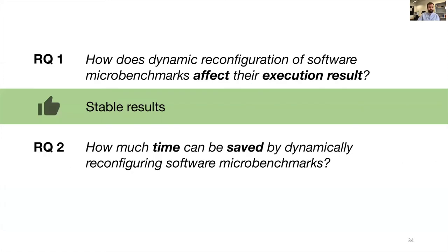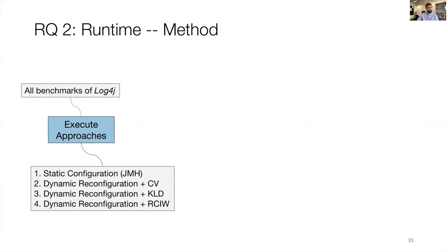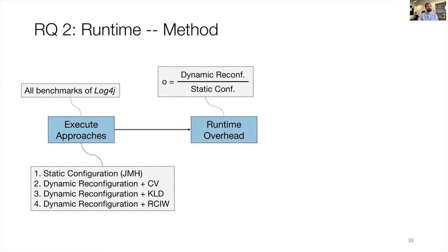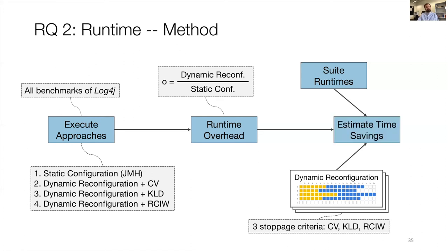For research question two, we execute all four approaches — static configuration and three dynamic reconfiguration variants — for one of our study subjects, calculate the runtime overhead per benchmark between each dynamic approach and the static configuration, and then use that overhead along with information about suite runtimes and iteration/fork counts to estimate time savings across all study subjects.